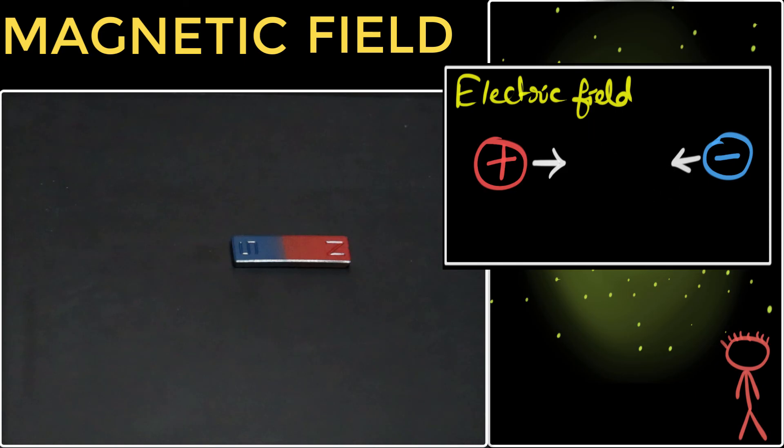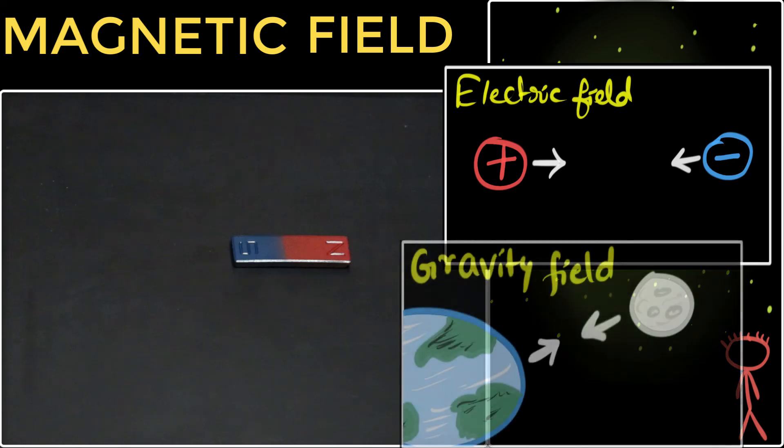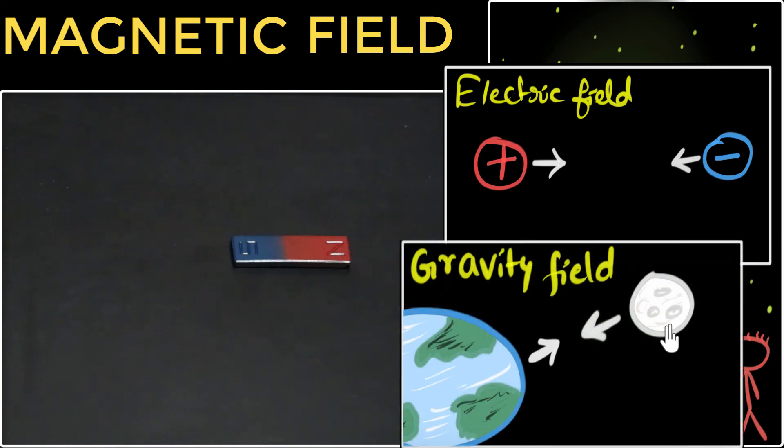And similarly, even the force of gravity, say between earth and the moon, acts over a distance. How does it work? Well, we say both the earth and the moon create a gravitational field. And it's the gravitational field that pushes other objects which have masses. Gravitational fields affect masses. Electric fields affect electric charges. And magnetic fields affect magnetic materials, or magnets.